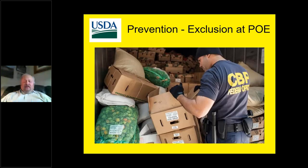Another prevention method is exclusion at the ports of entry. As mentioned with the steel slab example, the Department of Homeland Security, Customs and Border Protection (CBP), are the ones who inspect shipping containers and other things that come in on various conveyances — ships, planes, etc. Prevention through port arrival inspections helps manage that pathway. If something is found at a port of entry and identified as a pest of concern, it can be returned to the point of origin, destroyed on site, or treated such as through fumigation.